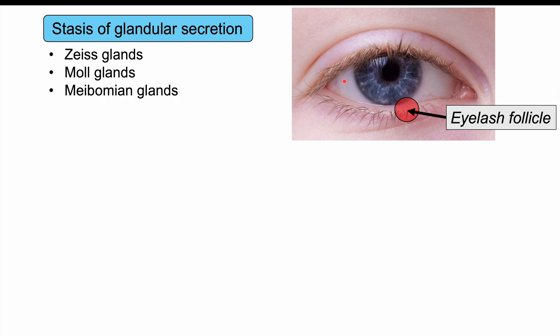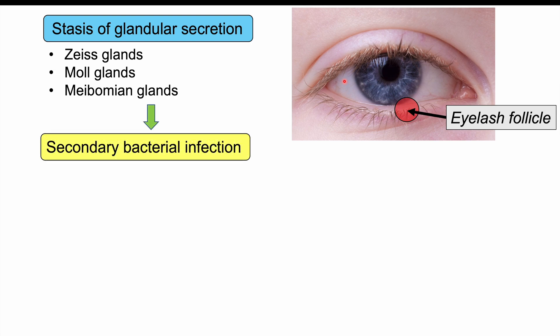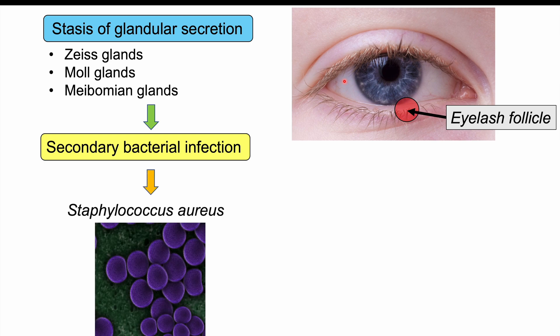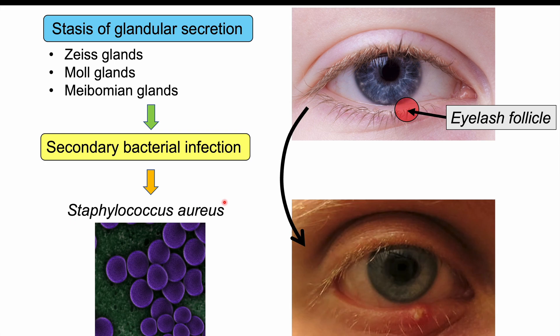If there is stasis or blockage of any of these glands, there can be a secondary bacterial infection. Bacteria can get into that blocked gland and cause an infection — this is how we get a stye. The most common bacteria causing infection in a hordeolum is Staphylococcus aureus. So one of these glands becomes blocked, leading to a secondary bacterial infection with Staphylococcus aureus, which produces the stye.